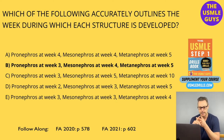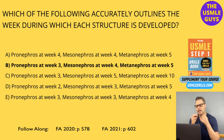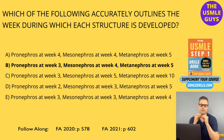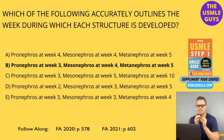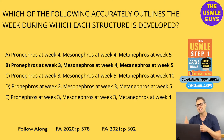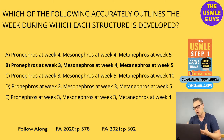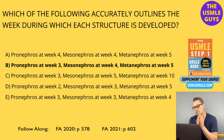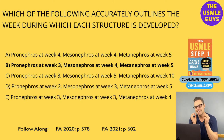The metanephric mesoderm gives rise to things like the glomerulus and its capillaries, the Bowman capsule, the PCT, the loop of Henle, and the DCT. Remember that the final thing to canalize during development of the system is the uretero-pelvic junction. As a result of it being the last thing to canalize, it will be the thing most likely to experience pathologies, and it is going to be the most common pathological cause of hydronephrosis in the prenatal stage.